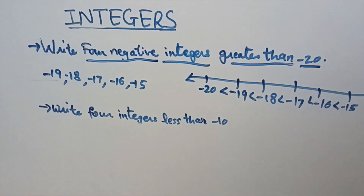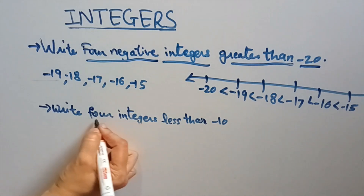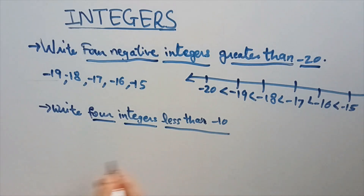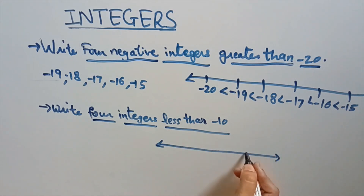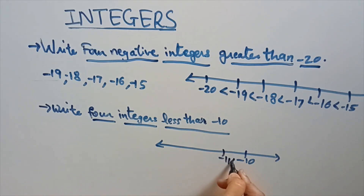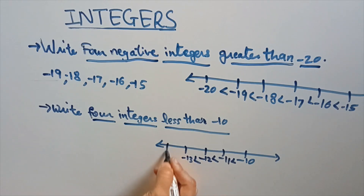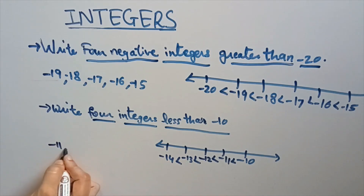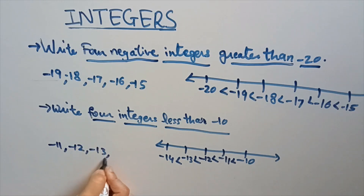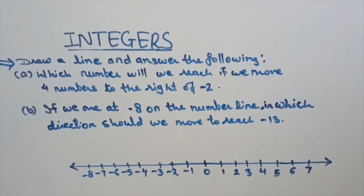Now we have to write 4 integers less than minus 10. On the number line, suppose minus 10 is here — we have to write 4 integers less than minus 10. So: minus 11, then minus 12, then minus 13, then minus 14. The 4 integers are minus 11, minus 12, minus 13, minus 14 — these are the 4 integers less than minus 10.